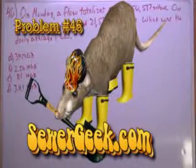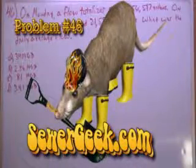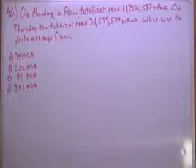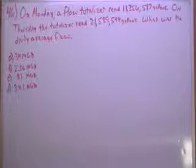Problem number 46, the wastewater collection study guide from SewerGeek.com. On Monday, a flow totalizer read 11,356,587 gallons. On Thursday, the totalizer read 21,589,544 gallons. What was the average daily flow?